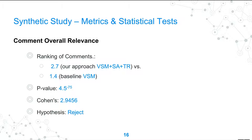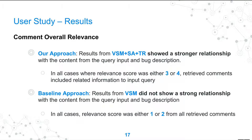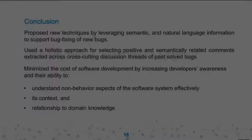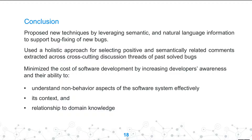The p-value score was very high, and based on Cohen's kappa, the hypothesis was rejected — the difference between VSM and our approach was significantly large. Users reported that comments returned by our tool were relevant, scoring three or four, whereas the best baseline scored only one or two. This confirms that VSM combined with sentiment analysis and TextRank has a stronger relation with the content from the query input and bug description.